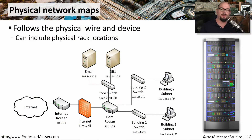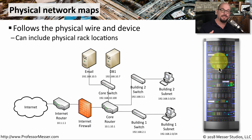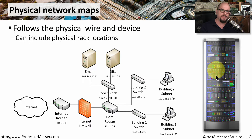If you've been tasked with creating some documentation of your network configuration, you might want to create a physical network map. This would show us exactly what devices might be on the network, and it would show the physical cable connections from one interface to another. It's also common to create a physical map of where devices might be installed in a particular rack, allowing you to go into a data center to a specific rack and identify exactly the piece of equipment listed in your documentation.